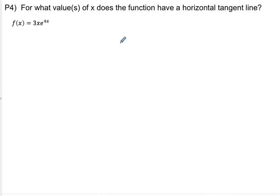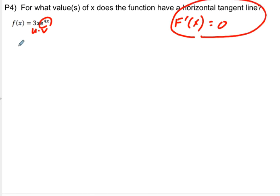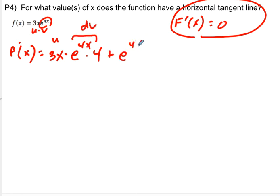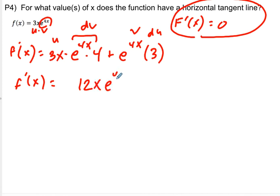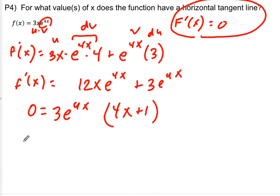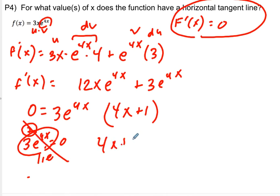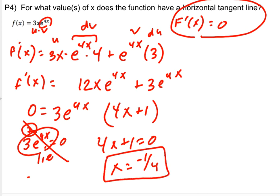For the second horizontal tangent problem, again a product rule with a chain. f prime of x equals 12x e to the 4x plus 3e to the 4x. Setting equal to 0 and factoring out a GCF of 3e to the 4x gives 3e to the 4x times 4x plus 1 equals 0. Since 3e to the 4x is always positive, the only solution is 4x plus 1 equals 0, so x equals negative 1 fourth.